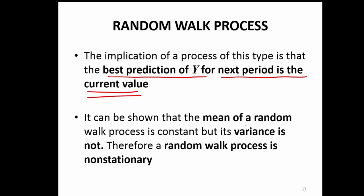It can be shown that the mean of a random walk process is constant, but the variance is not. Mean of the random walk in many situations can be constant, but variance is never constant. And that is why random walk is a typical case of a non-stationary series.